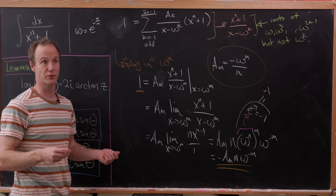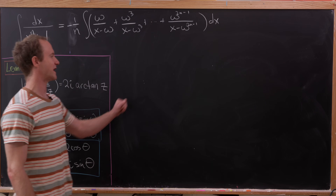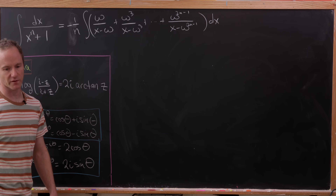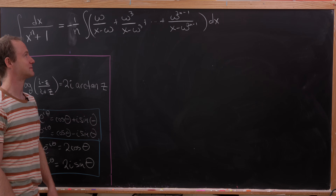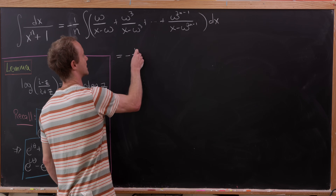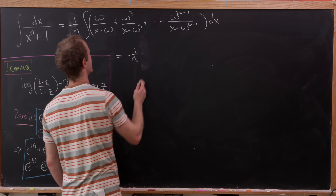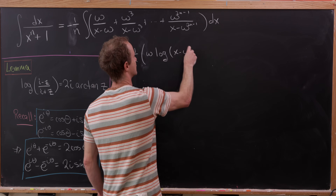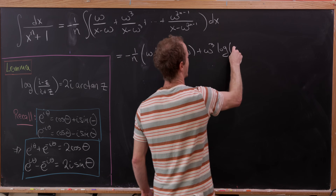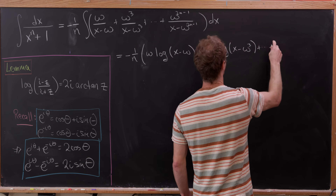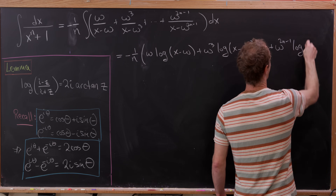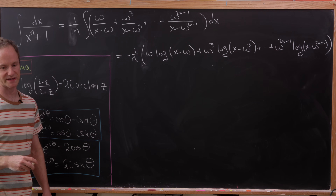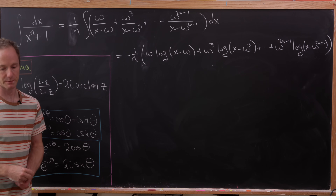Using this partial fraction decomposition, we get minus 1 over n out front, and then the sum: omega over (x minus omega) plus omega cubed over (x minus omega cubed), and so on. The antiderivatives are straightforward: minus 1 over n times the sum of omega to the m times the logarithm of (x minus omega to the m), summed over odd m from 1 to 2n minus 1. However, complex numbers appear throughout, so we need to simplify.